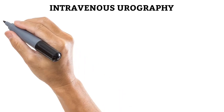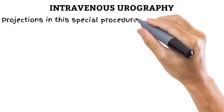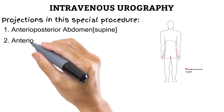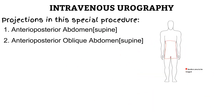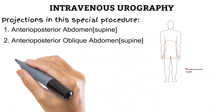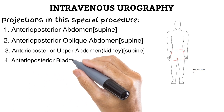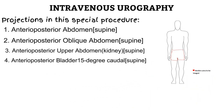To better understand how to perform this procedure, there are four supine projections that you should be familiar with: the AP abdomen, the AP oblique abdomen, the AP of the kidney area, and the AP of the bladder area with a 15-degree caudal angulation. If you are not familiar with any of these projections, try to read about it in your positioning textbook before moving further in the video.